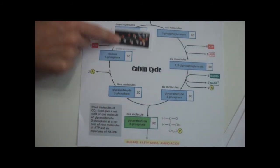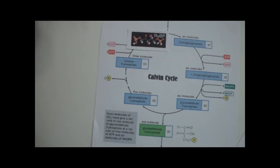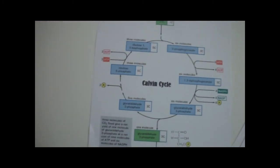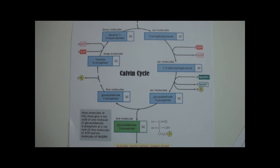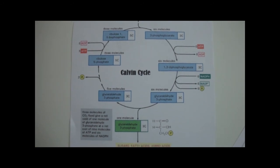In total, three carbon dioxide molecules, nine ATP, and six NADPH are consumed to produce one G3P sugar molecule.